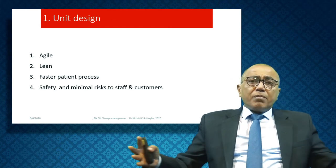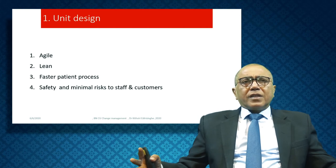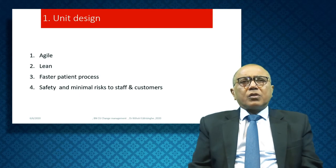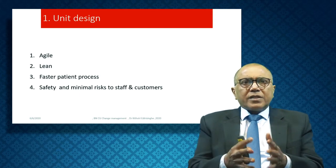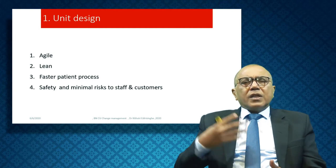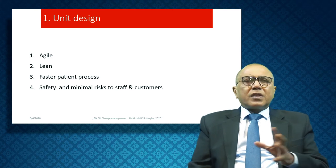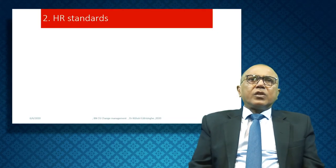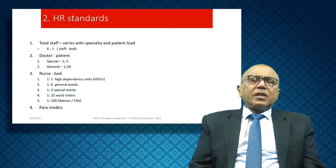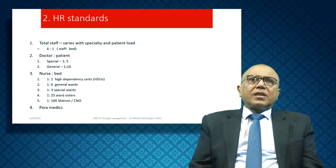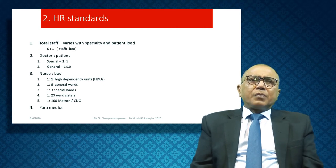The structure should be lean — fat structures are not good for hospitals. You should have a lean structure for faster patient flow: how can you support the throughput of the patients? Safety and minimum risk for staff and customers. You put up HR standards. Generally, one would have a ratio of six beds to one nurse, and for specialized units like ICU, it is one-to-one.